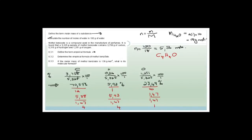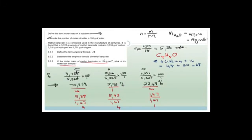Now, if the molar mass of methylbenzoate is 136 grams per mole, what is the molecular formula? The empirical formula mass of C4H4O is: 4 times 12 plus 4 plus 16, which is 48 plus 20 equals 68. If we multiply 68 by 2 we get 136, so the molecular formula is double the empirical formula: C8H8O2.